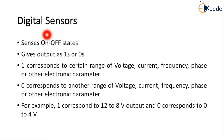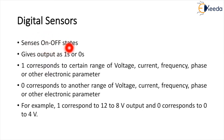Digital sensors are sensors in which the signal is directly converted into a digital signal output. The sensor has both on and off states. Some examples of digital sensors are door sensors, LED lights, alarms, push button switches, and so on. It gives the output as ones and zeros — one means on and zero means off.